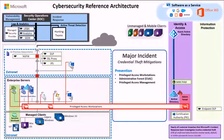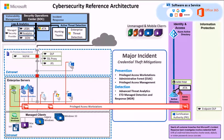Looking at the major incident components, this gives an idea of where they show up on the roadmap. We've referenced the Privileged Access Roadmap, and we encourage customers to visit that — it'll be one of the links in the course. These components include protection pieces, detection pieces, and response pieces in case an incident is successful.